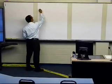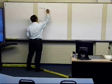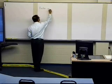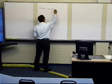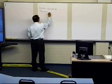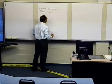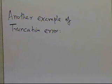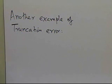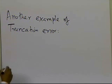In this segment, we're going to look at another example of truncation error. In the other examples, we mentioned how truncation error is basically about approximating mathematical procedures, so let's look at another example to see where truncation error is created.